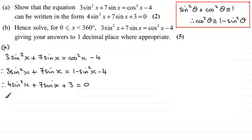Okay, we come on to part b now. And in part b it says, hence solve for 0 ≤ x < 360°, the equation 3sin²x + 7sin x = cos²x - 4, giving your answers to one decimal place where appropriate, for 5 marks. So again, if you'd like to have a go at this, I'll just give you a moment to pause the video.